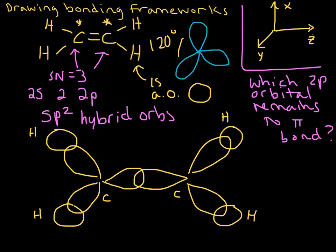So this bond right here, I've drawn one of them, so that's a single bond with the sigma bonding framework. The pi bond we still haven't drawn the bonding framework for, and so we need to figure out which of these 2p orbitals is left over.